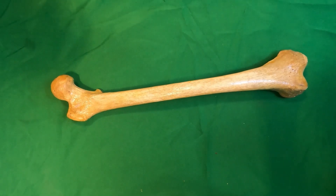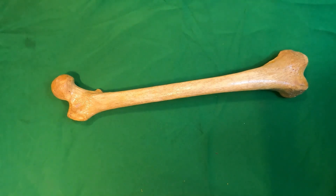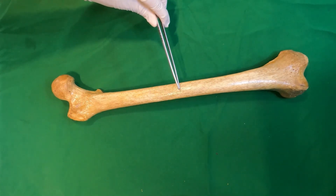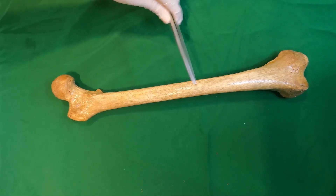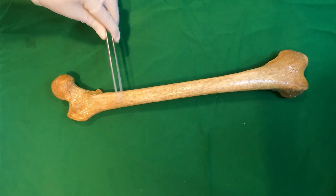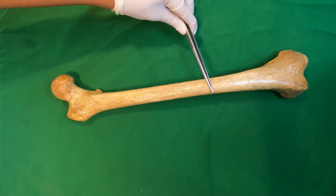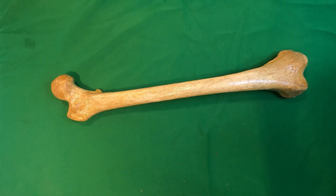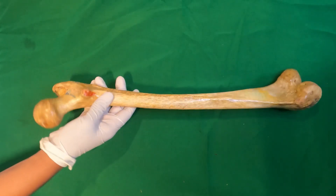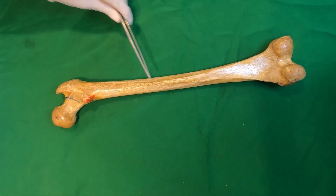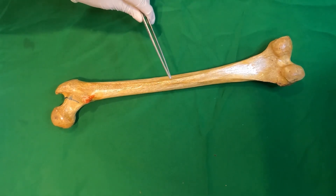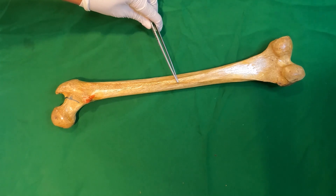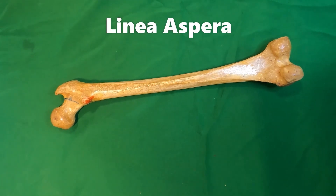The shaft. It is cylindrical in shape. It is narrowest in the middle and is more expanded inferiorly than superiorly. It is convex forwards and is directed obliquely downwards and medially. The upper ends of two femora are separated by the width of the pelvis and their lower ends are closer together. In the middle one third, the shaft has a posterior border in the form of a broad roughened ridge called the linea aspera, the rough line.